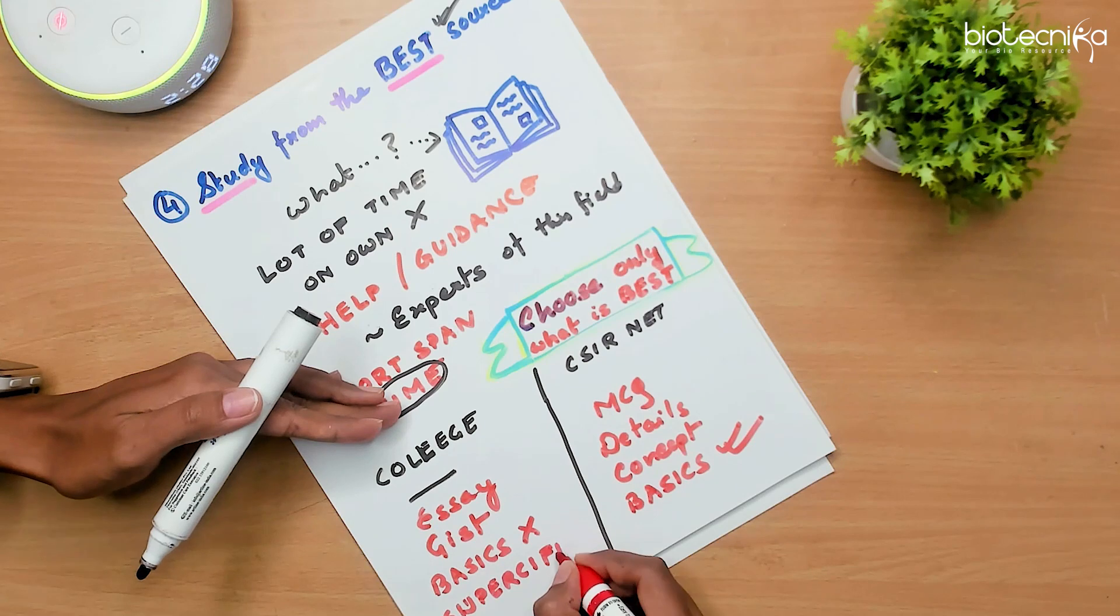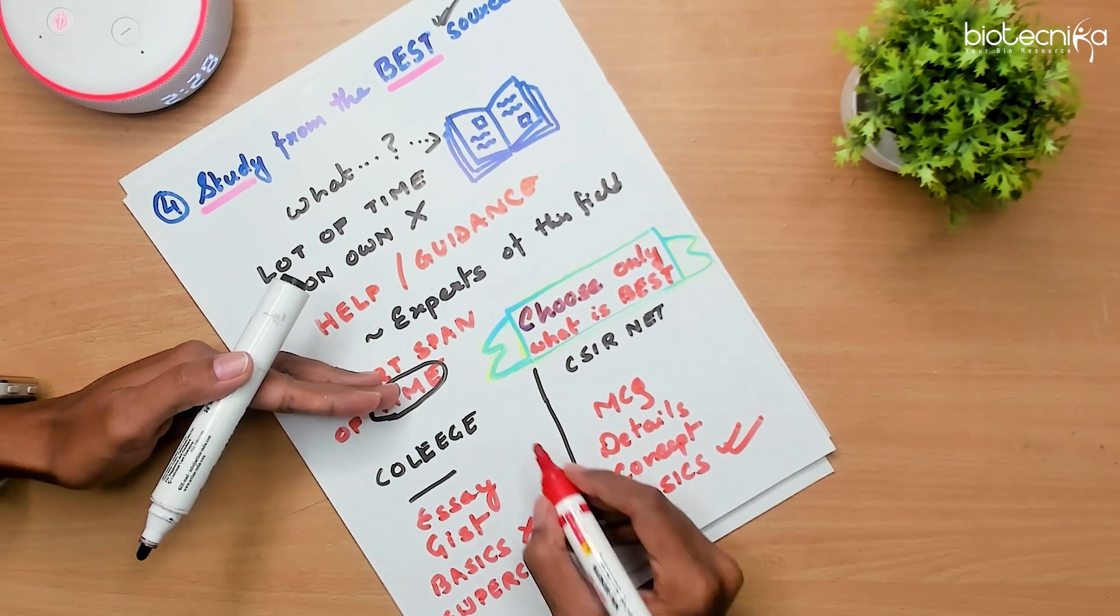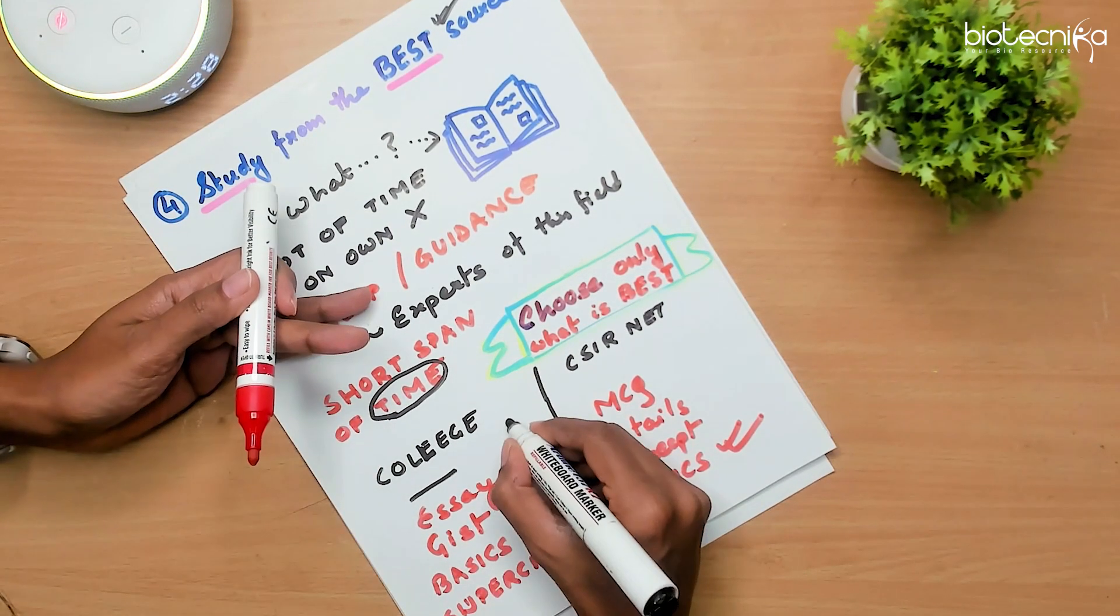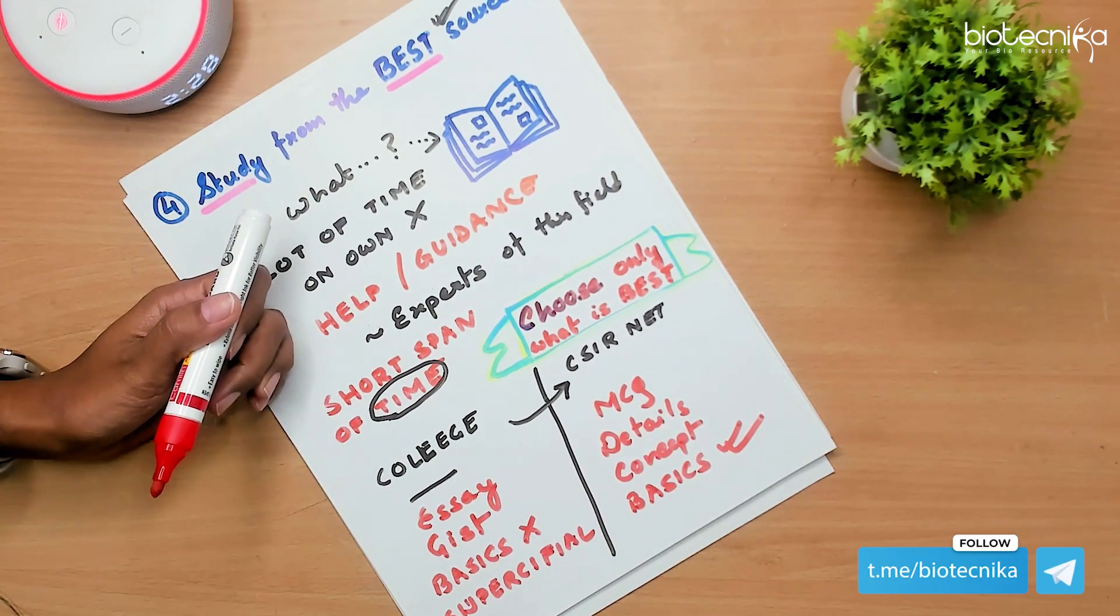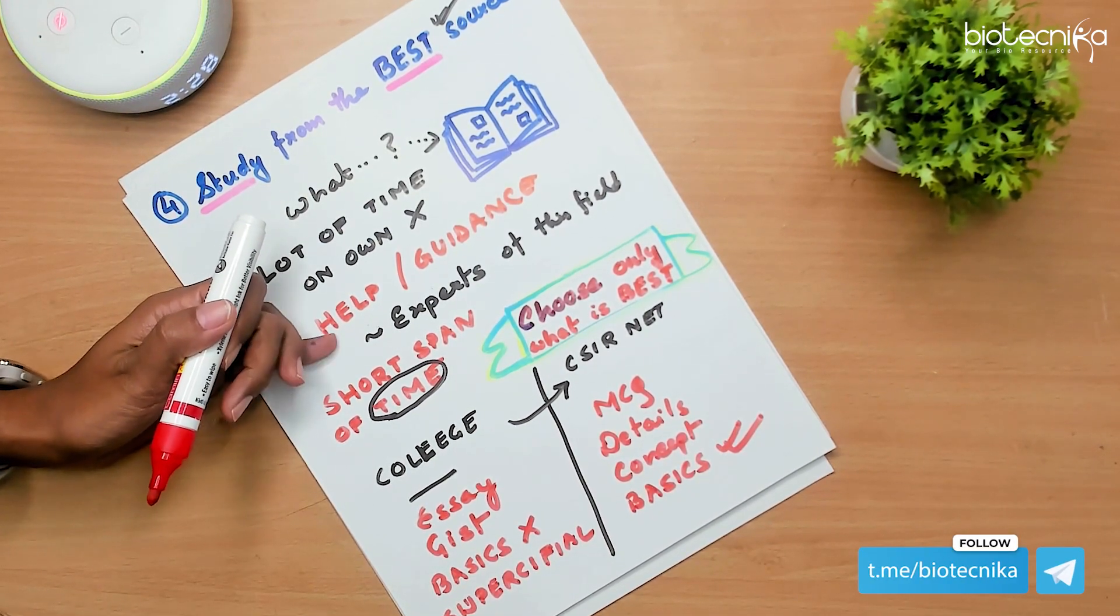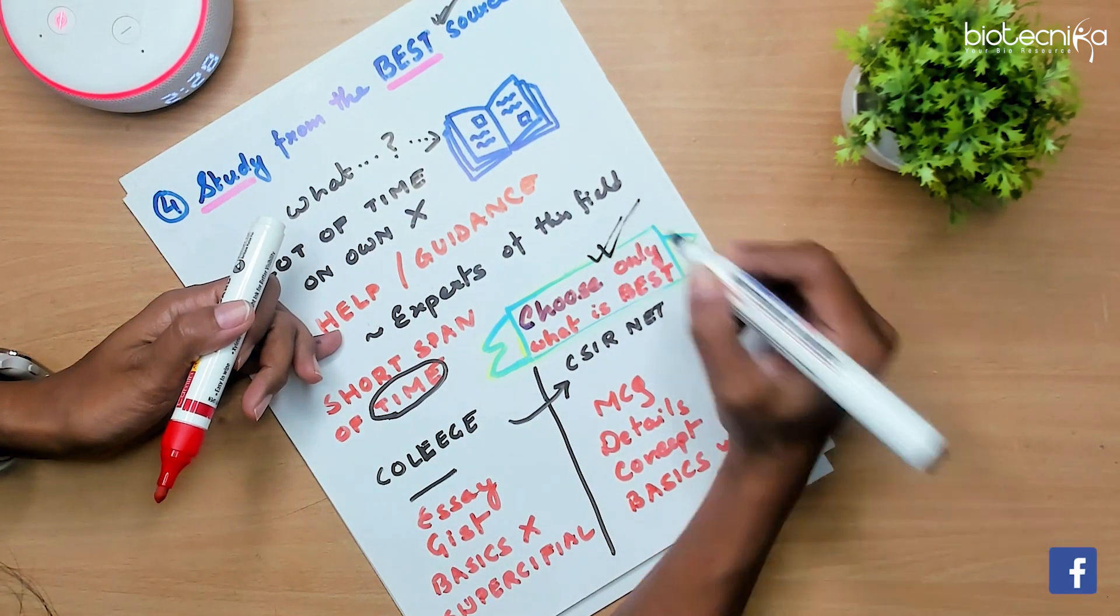So as you can see, when you are coming from college to CSIR NET preparation, you have to change your preparation pattern. And if you have no clue what to do, then you should take guidance from the experts. Choose only what is best and has a track record throughout.